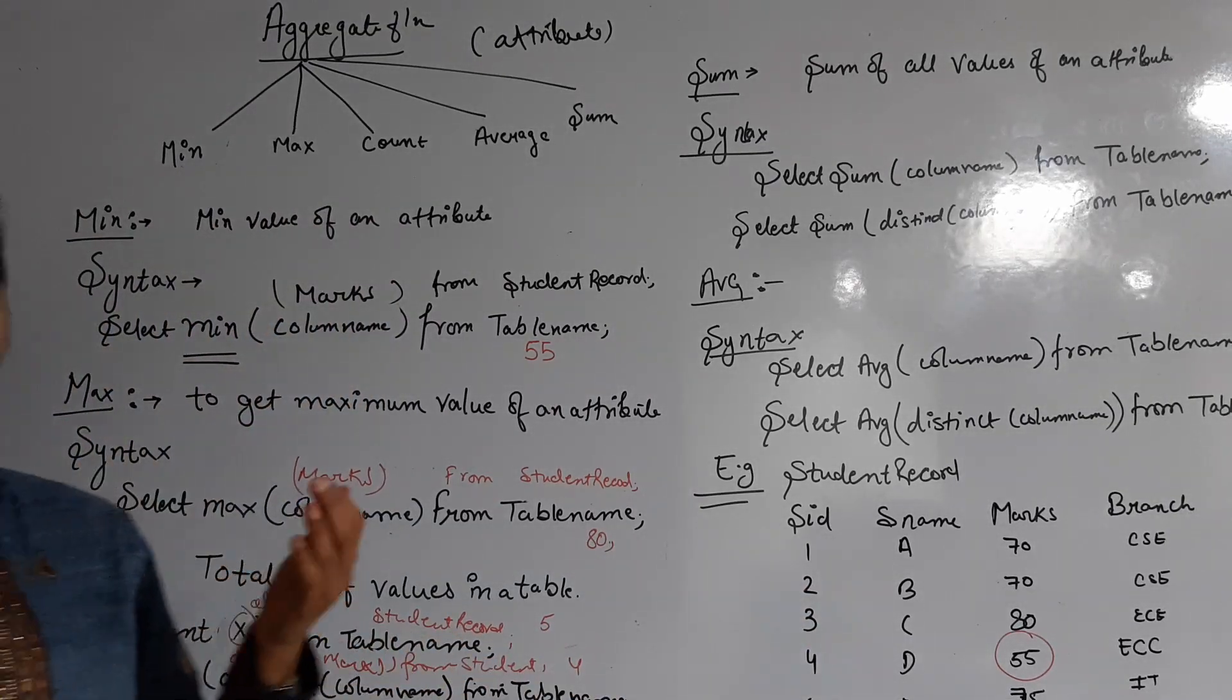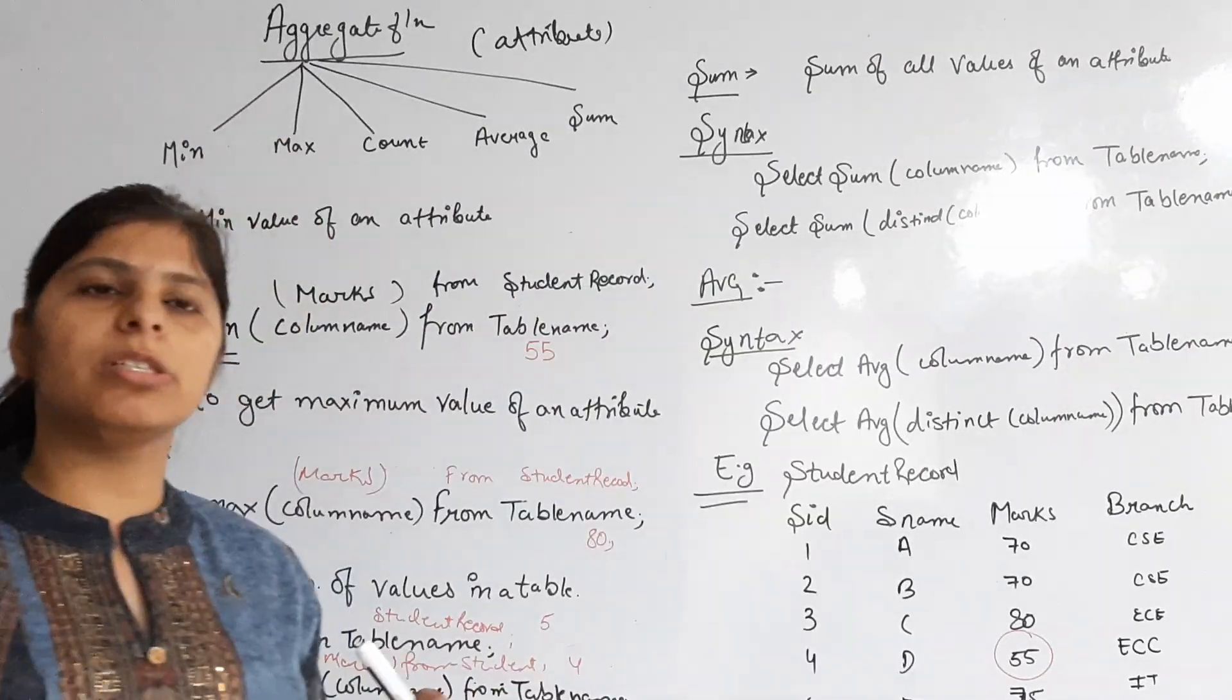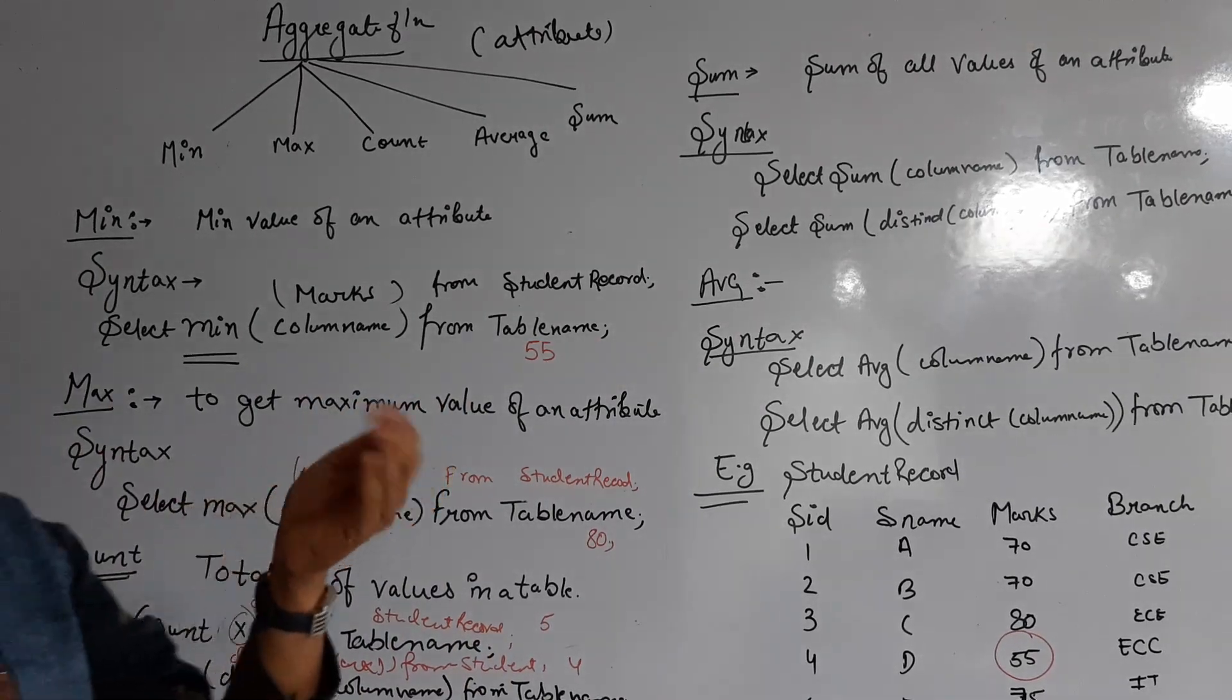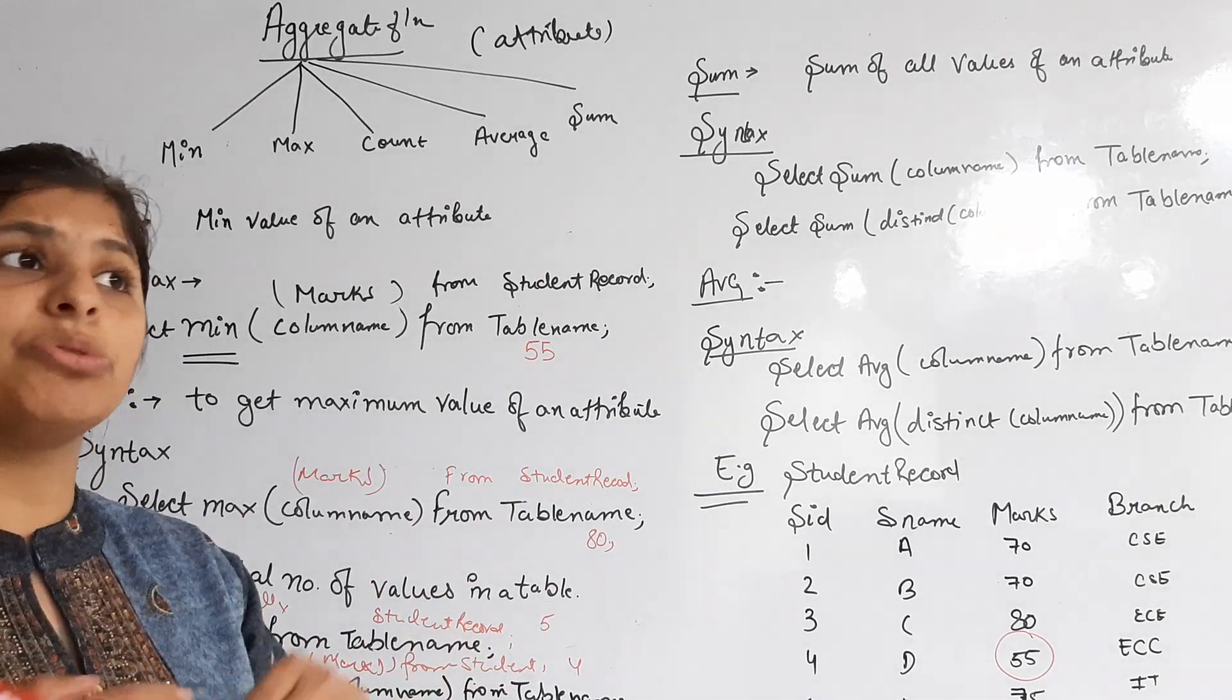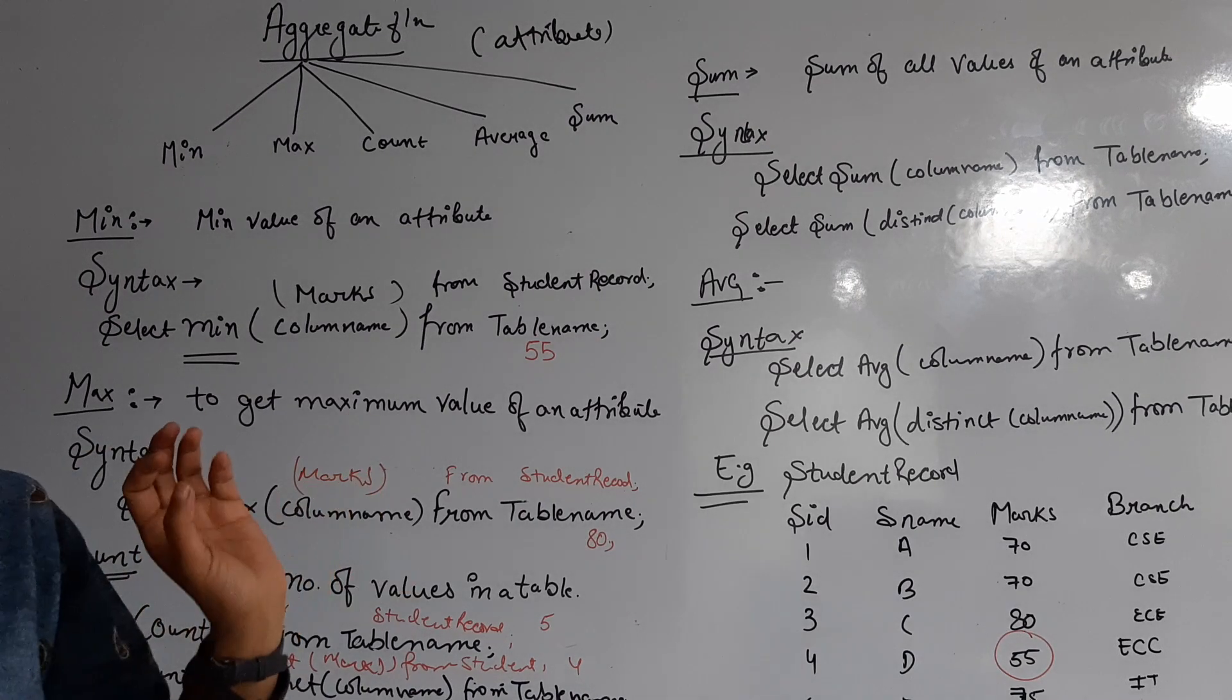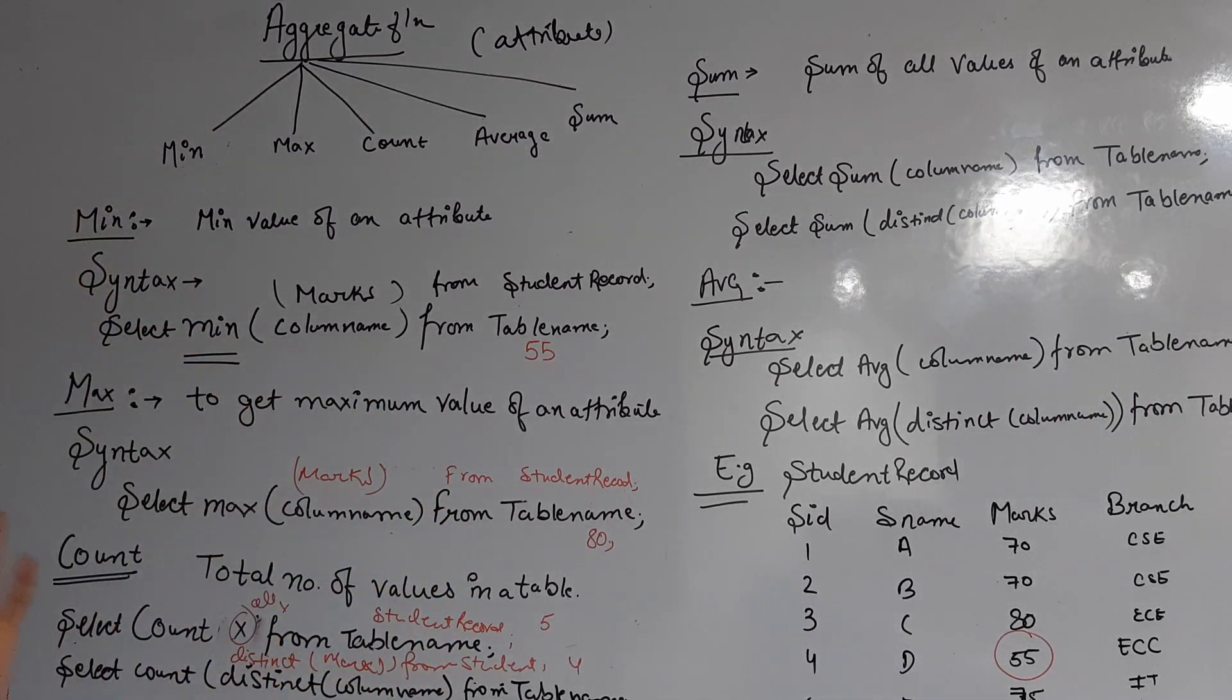When we have 65 students in a class, suppose it's not like all 65 students have unique marks - that's not possible. So many of them, like roll number one, roll number five, roll number seven, have the same marks. We have to remove all the duplicate values. We want to see how many distinct marks are there, what range they are taking. So it will give the count of the number of records which have distinct values.